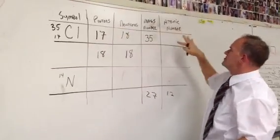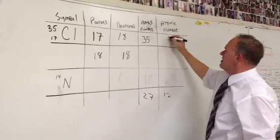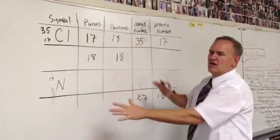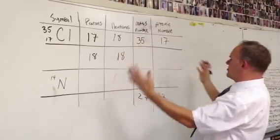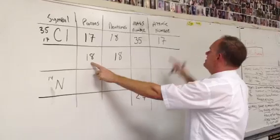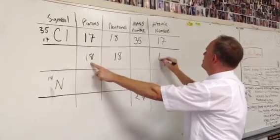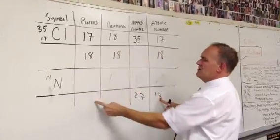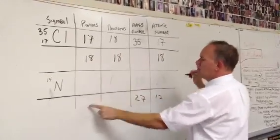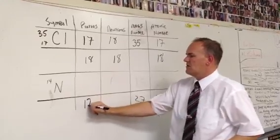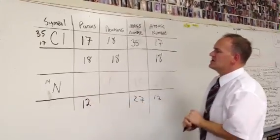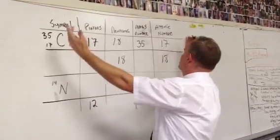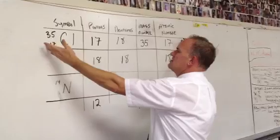Whatever's in the protons column needs to go in the atomic number column. For this whole chart, we can look and see whether there's any other place where that happens. So here, 18 should be copied over, and down here 12 should be copied over, because protons are always the same thing as atomic number. And now we've got this entire row done.